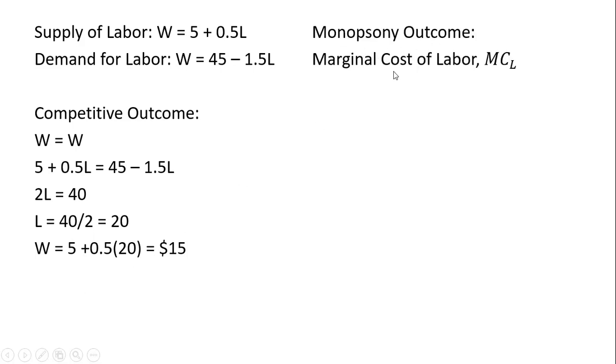Now we're going to do the monopsony outcome. The monopsony outcome, a key thing here, is to get the marginal cost of labor, MC subscript L. And the simple shortcut method of getting the marginal cost of labor is to look at the supply of labor equation and just take the slope of it and multiply it by 2. So the 5, that is exactly the same.